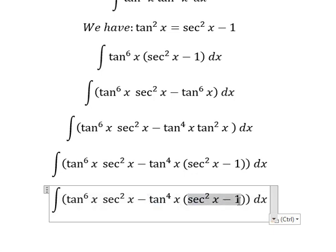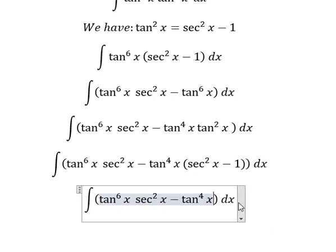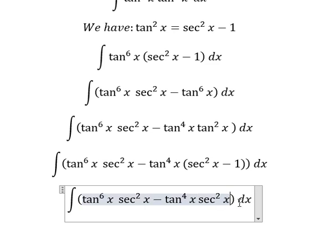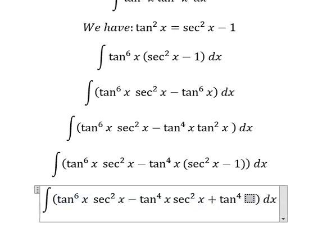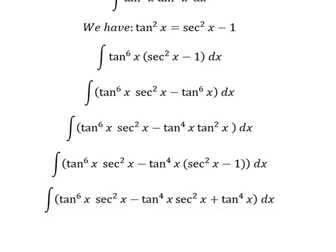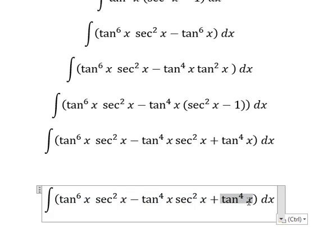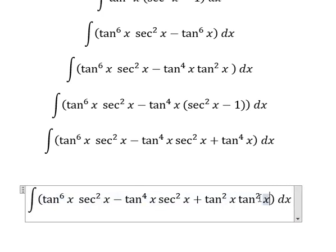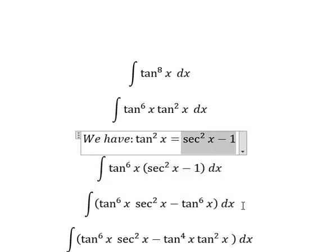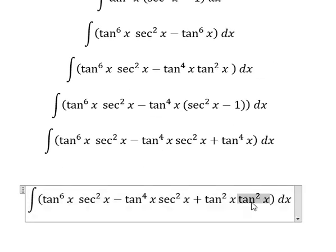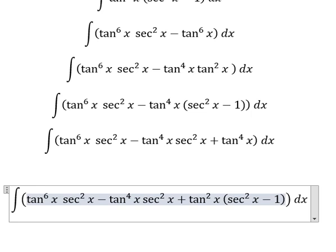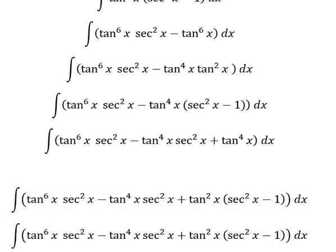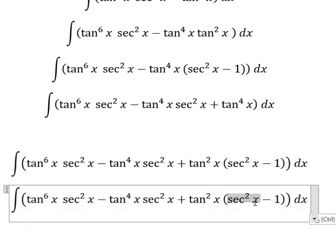So we have like this, this one is about tan^2(x) and tan^2(x). This one we need to transform into this form, so tan^2(x) multiplied by this one and negative 1.